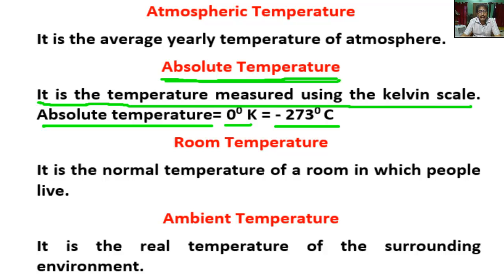Absolute temperature is the temperature measured using the Kelvin scale where zero is absolute zero. It is the temperature of an object on a scale where zero is taken as absolute zero — the temperature at which a thermodynamic system has the lowest energy.